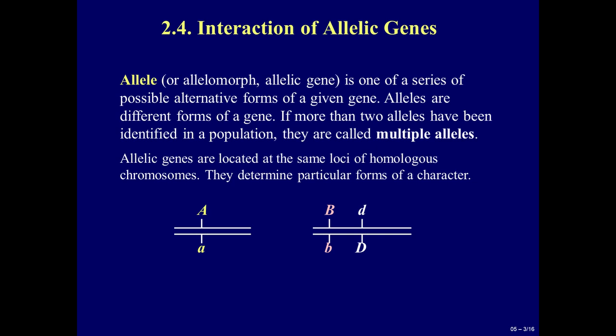Interaction of allelic genes. An allele or allelomorph is one of a series of possible alternative forms of a given gene. Alleles are different forms of a gene. If more than two alleles have been identified in a population, they are called multiple alleles. Allelic genes are located at the same loci of homologous chromosomes and determine particular forms of a character. In our picture, big A and small a are allelic genes, as are big B and small b, and big D and small d.